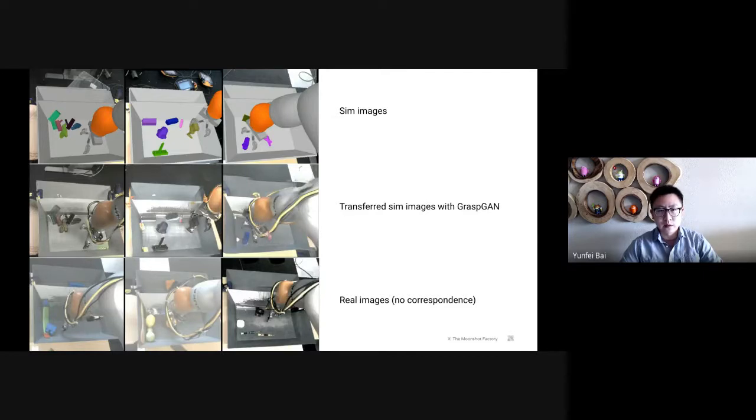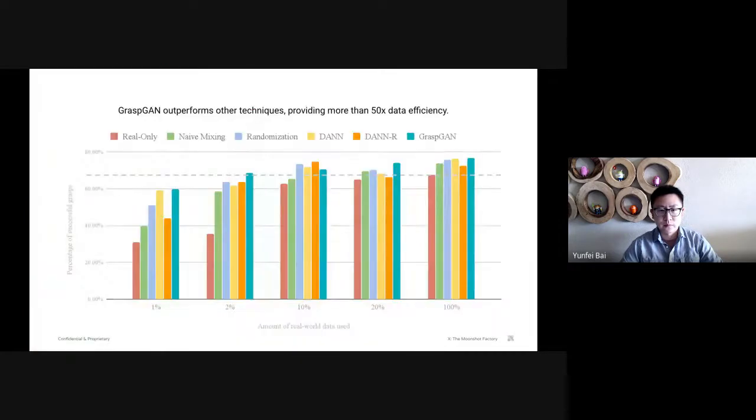Here are more results for comparison. The first row is the synthetic image from the simulator. The last row is the real world image. Note that we don't require paired data for training GAN in this work. The middle row is the transfer sim images with GraspGAN. You can see visually, they look much closer to the last row compared to the raw sim images. So how well does this work for robot grasping tasks? With GraspGAN, we showed that it can achieve the same performance with only 2% of real world data. Basically, we were able to achieve 50x data reduction.